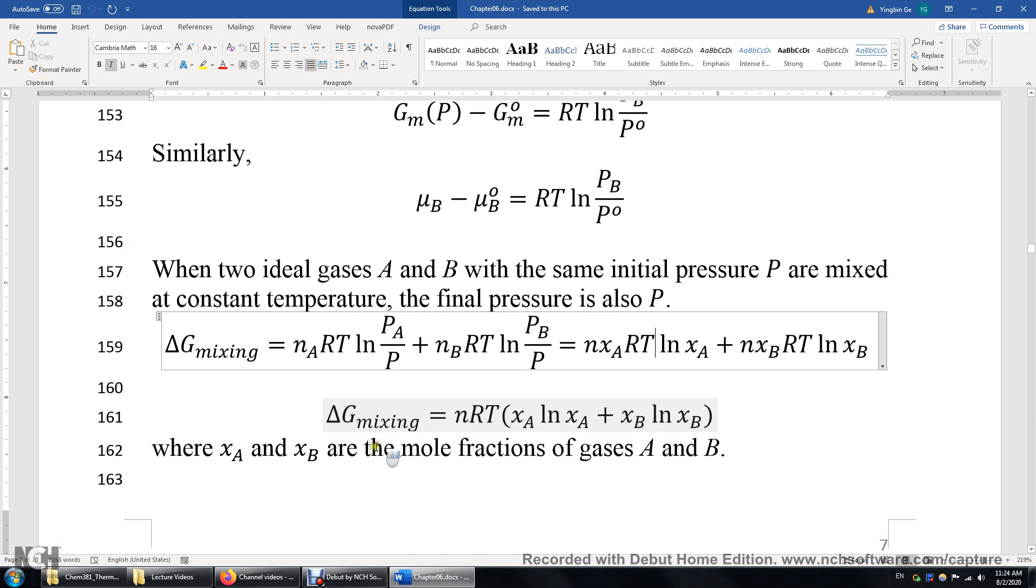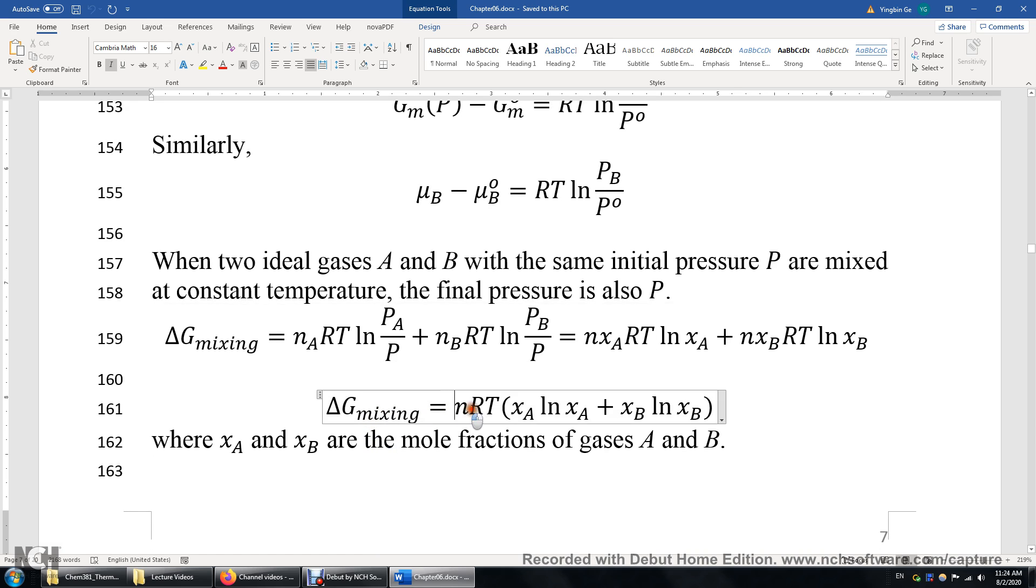Now the Gibbs energy of mixing is N, R, T times the sum of XA times ln XA plus XB times ln XB.